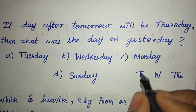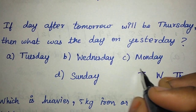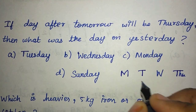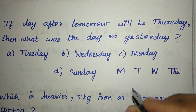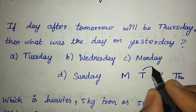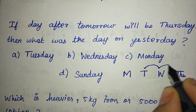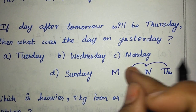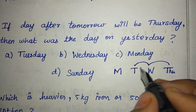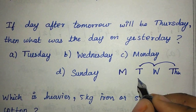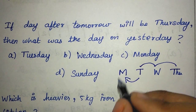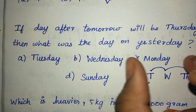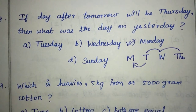If we look at yesterday, we will see this side of the page. Yesterday is Monday. Monday is the right answer. And day after tomorrow — we will say Tuesday, then Wednesday and Thursday. Yesterday is the right answer, Monday is the right answer.